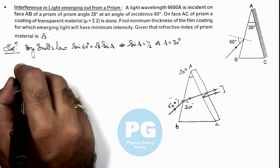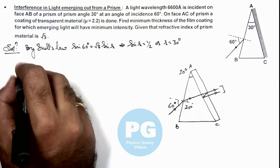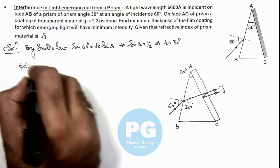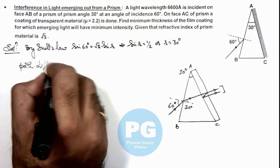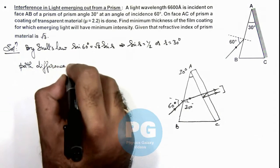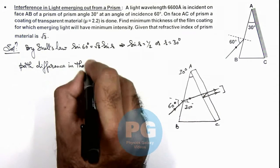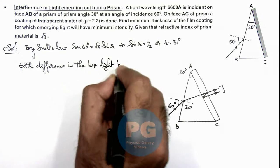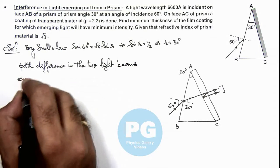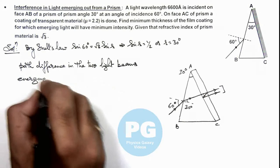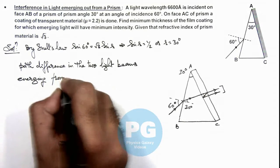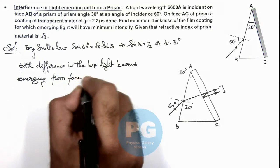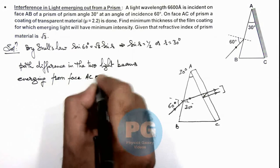So here if we calculate the path difference in the two light beams emerging from face AC of prism.